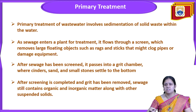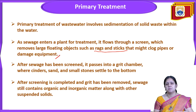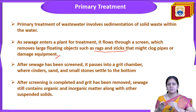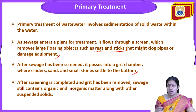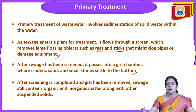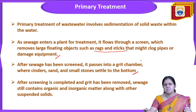As sewage enters the treatment plant, it flows through a screen which removes larger floating objects like rags and sticks that might clog pipes or damage equipment. After screening, the water enters the grit chamber where cinders, sand, and small stones settle to the bottom. After screening is completed and grit has been removed, the sewage still contains some organic and inorganic matter along with other suspended solids.